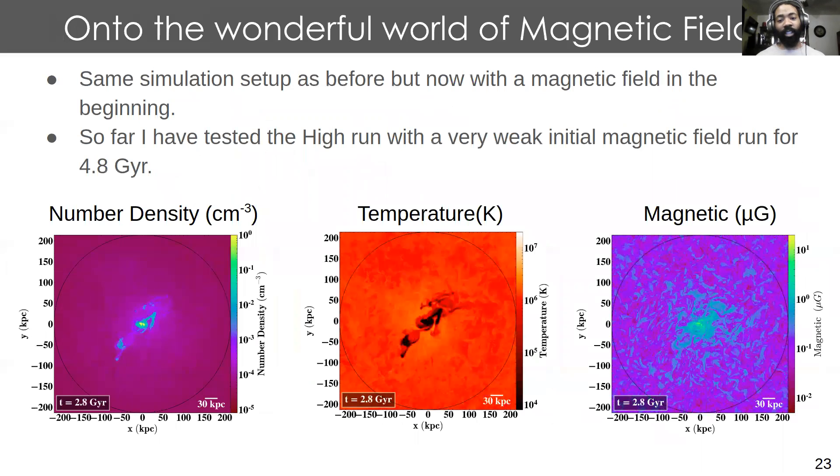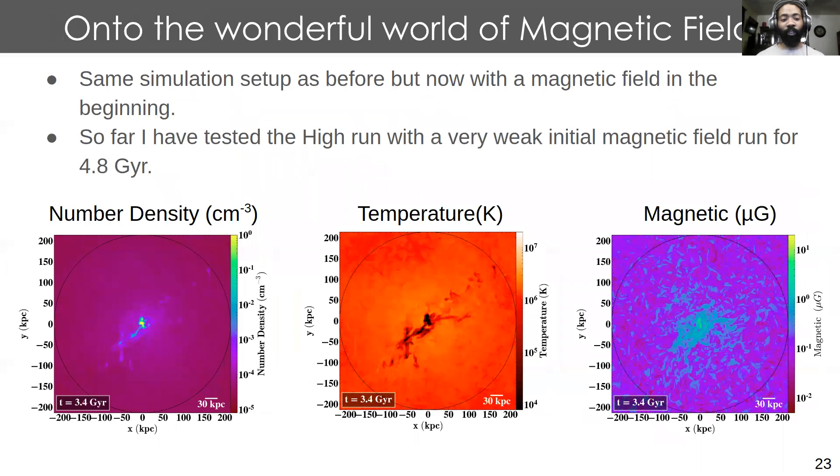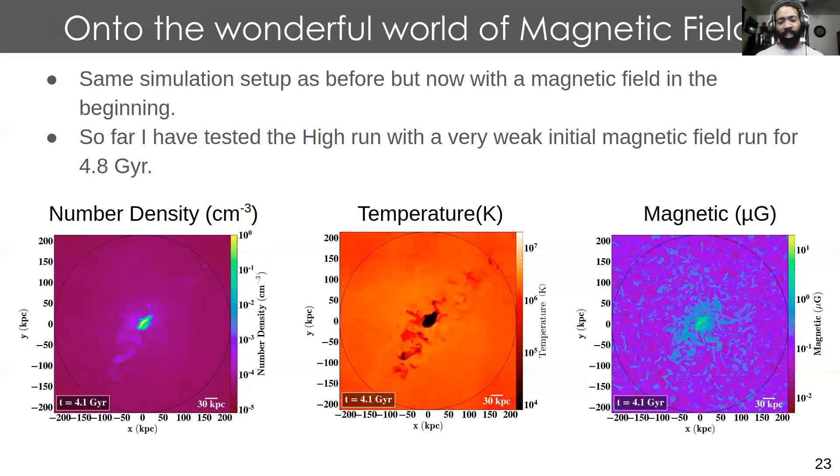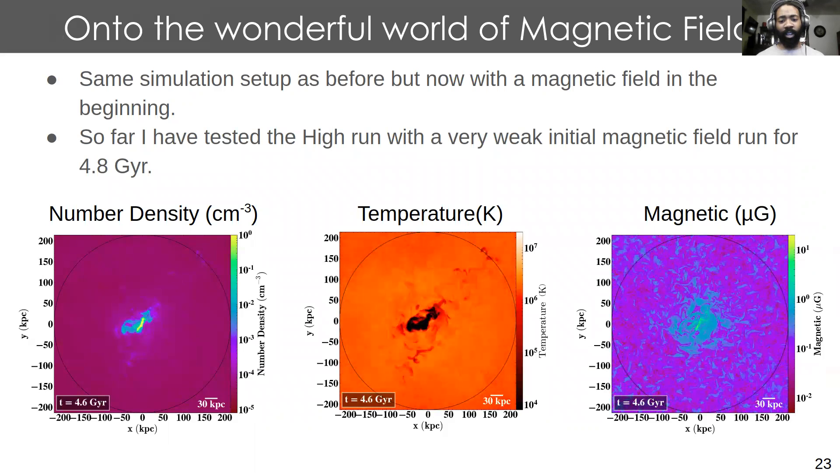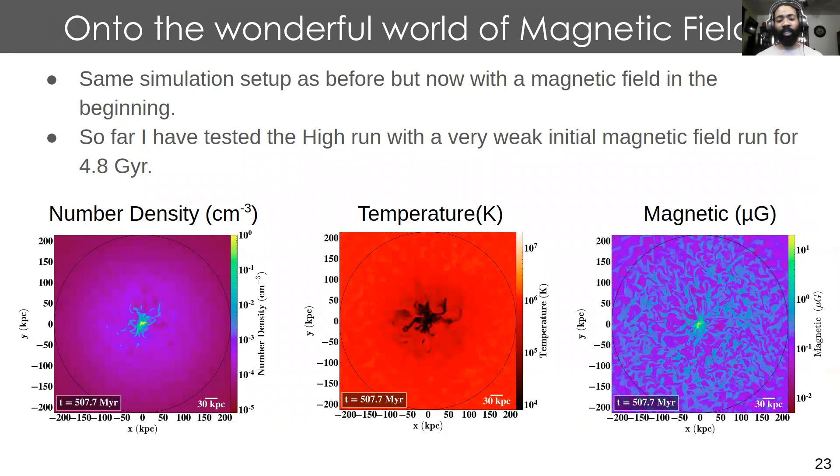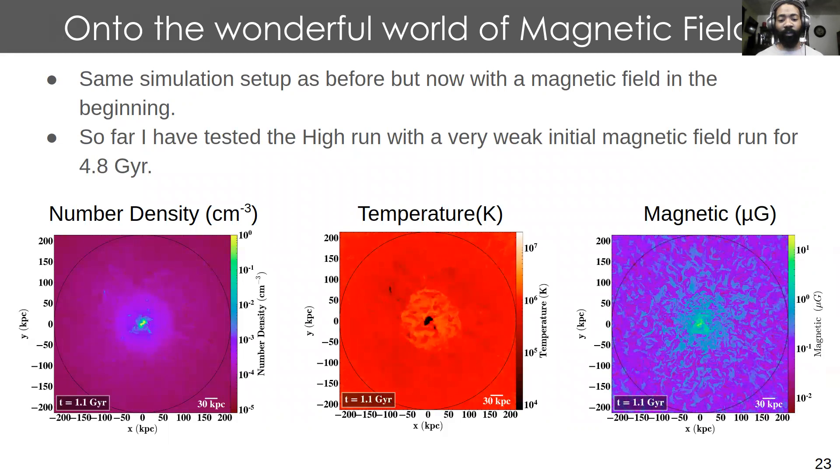Now we're looking at these magnetic field cases. So far I've run a few ideal and non-ideal ones. These runs are ideal, and I've also looked at considering the inner rotation of the circumgalactic medium and how that influences the cycling of matter.